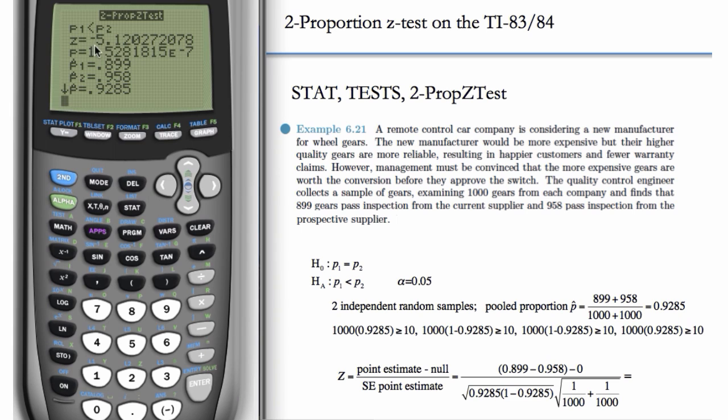And we see we get a z-score of minus 5.12, and a p-value, very, very small. Notice this also gives you p-hat, the pooled proportion. So, here's our 0.9285, which is what we calculated here, and they match.